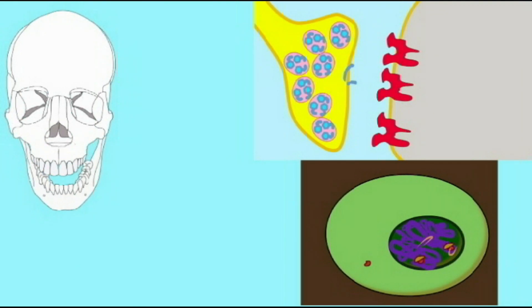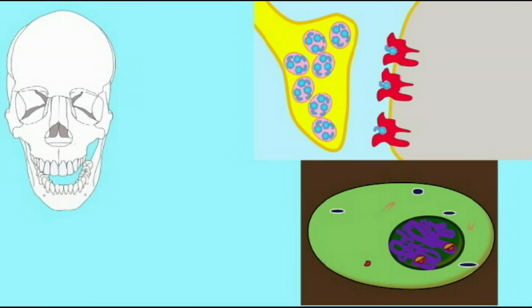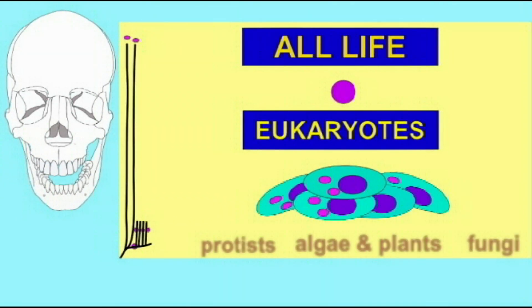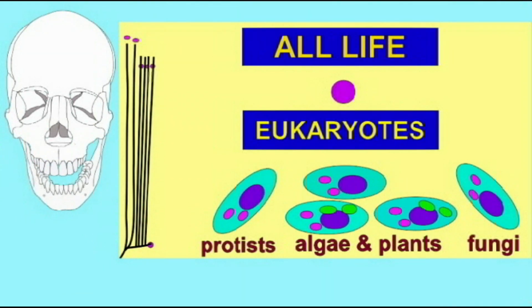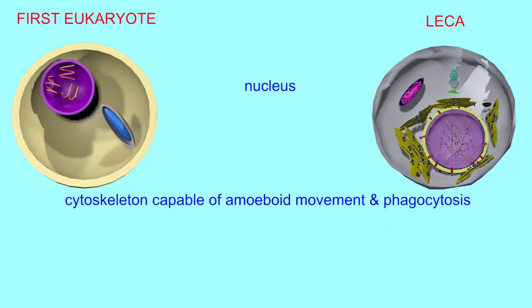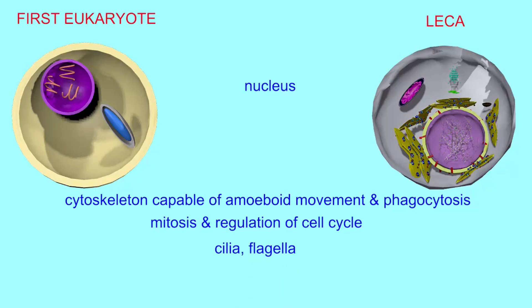Other things like cell division — which we refer to as mitosis — regulation of the cell cycle, cilia and flagella, endoplasmic reticulum, and Golgi: without representatives of this original eukaryotic cell or any lineages prior to LECA, it is difficult to try to pinpoint any of these evolutionary events.